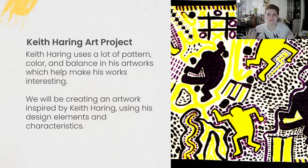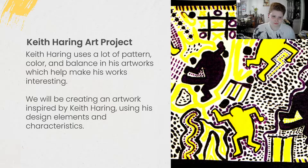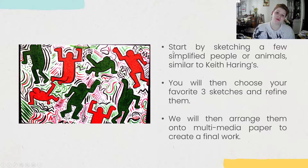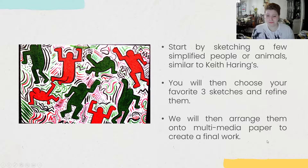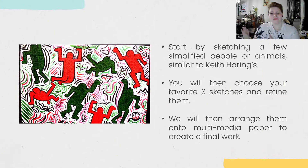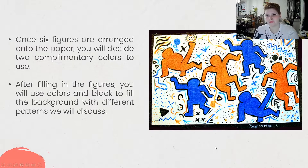We are going to create a Keith Haring art project. Keith Haring included a lot of patterns, colors, and balance in his artworks, which creates interesting composition and makes people notice and look around them. We're going to create our own Keith Haring artwork using his design elements and their characteristics. We'll start by sketching a few simplified people or animals — like the dogs, babies, and dancing people similar to Keith Haring's — then choose your favorite three sketches, refine them, and arrange them strategically on a piece of paper. We'll use six figures total — your three favorites repeated twice.